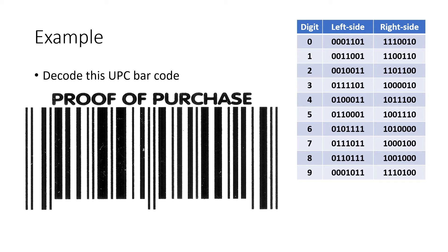Let's work through an example of actually interpreting a code by hand. The code is very large, so I won't go through all of it in full detail, but I'll do at least the first few digits so you get the idea. As we read this, the first thing we see is a dark bar, a light bar, and a dark bar — so this is our 101, which is our guard pattern. That's always at the front and end of every UPC code. We also see it again over here at the end — a 101, dark, light, dark.